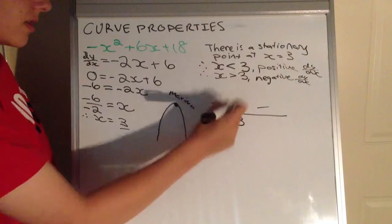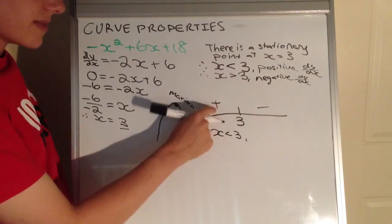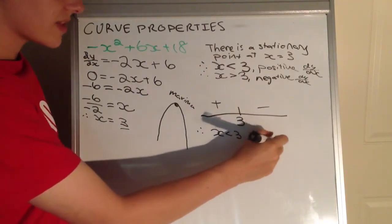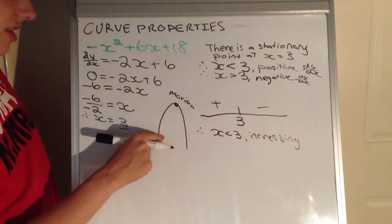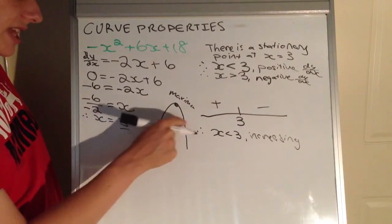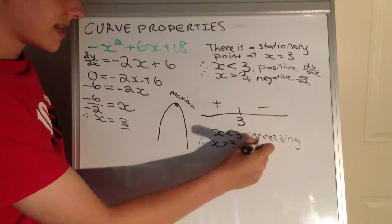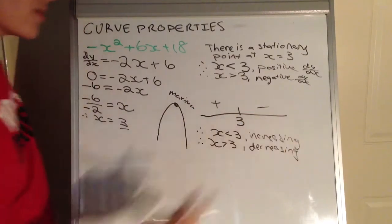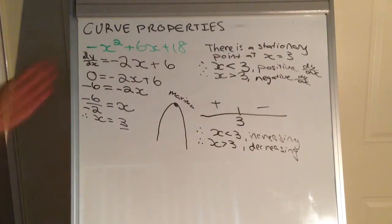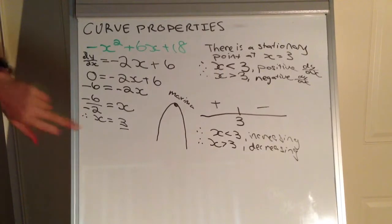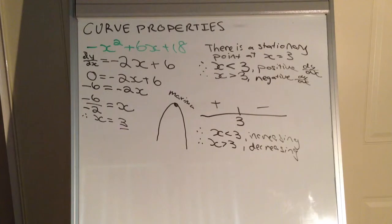Therefore, when x is less than 3, it's going to be increasing, because of the shape of this parabola — positive slope here, negative there. And when x is greater than 3, it's going to be a decreasing slope. So we've found those intervals. We set the derivative to zero to find out what's happening to the slope, and then we surveyed the slope at points either side of where the derivative is zero. There's a look at curve properties — first video, more parts coming soon. Hopefully that helped, thank you.